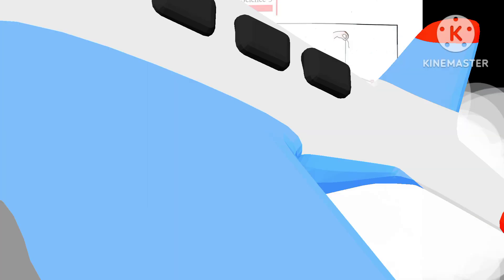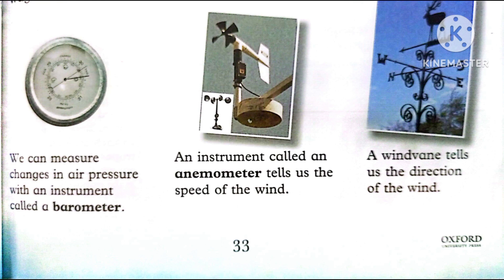Here we have some scientific instruments shown in pictures. First, we can measure changes in air pressure with an instrument called a barometer. We can also check the speed of wind with an instrument. The third picture shows a wind-related instrument. We can understand the direction and speed of wind using these tools.